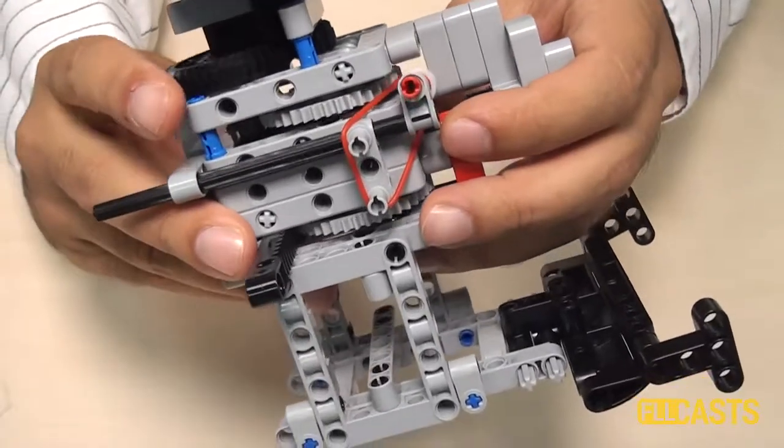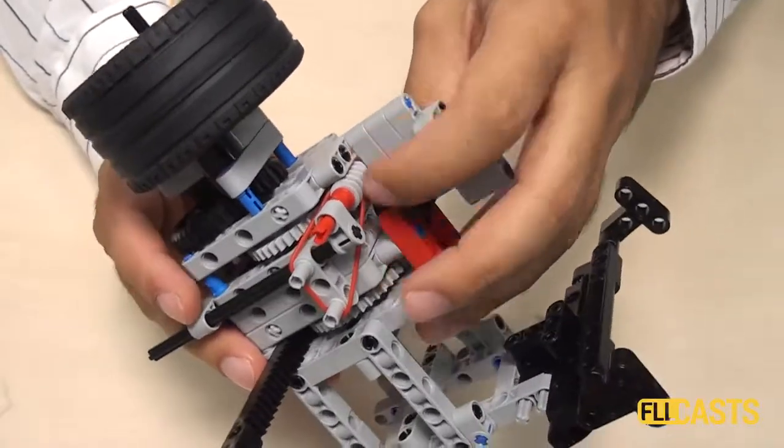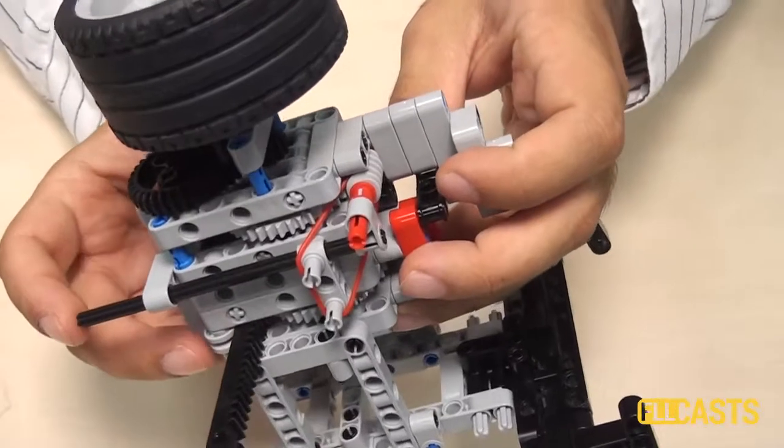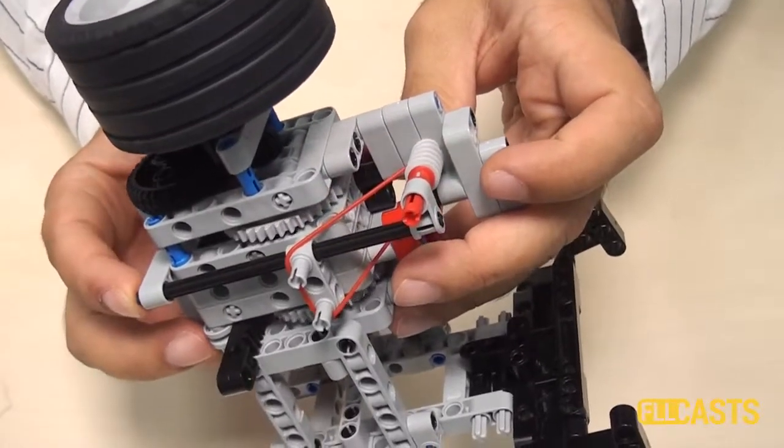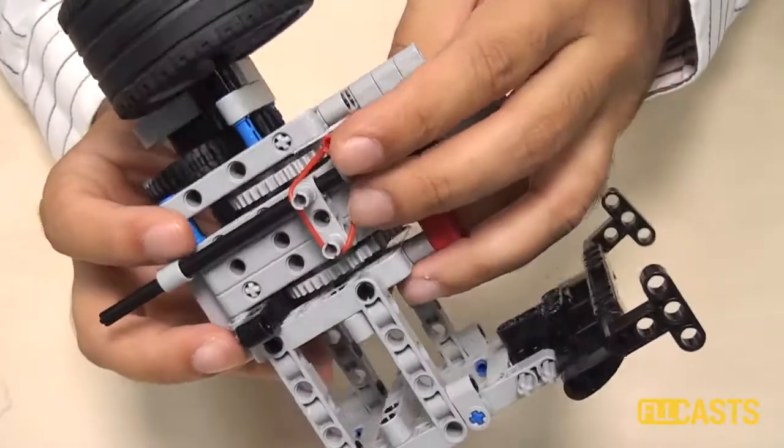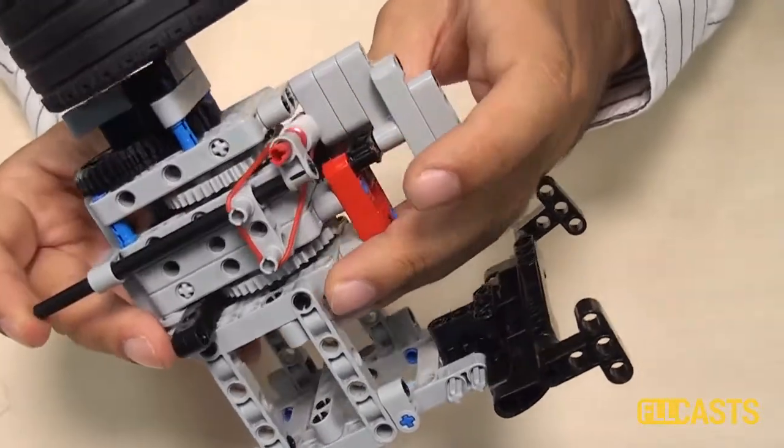And when we push on the axle, we'll release the gear wheel and we'll start rotating. Again, I'll load the attachment. The worm gear is stopping the other gear wheel from rotating. And now when I push the axle, we're releasing the attachment and the gear wheel rotates. So that's the second interesting part from this element.